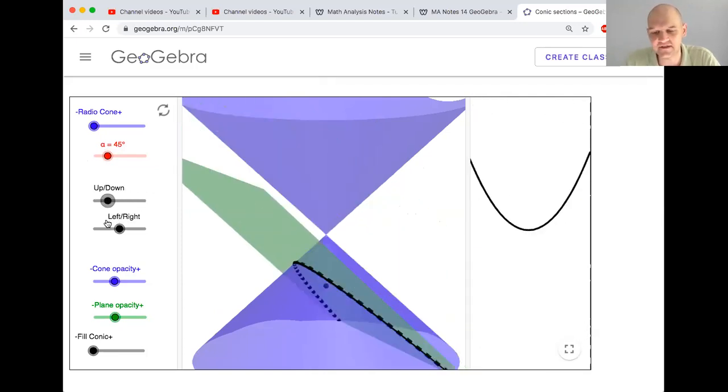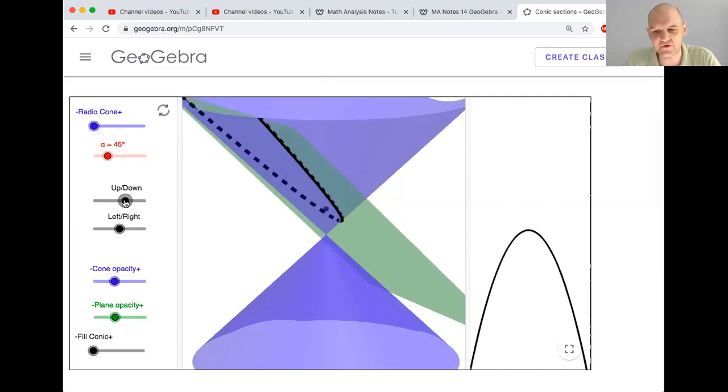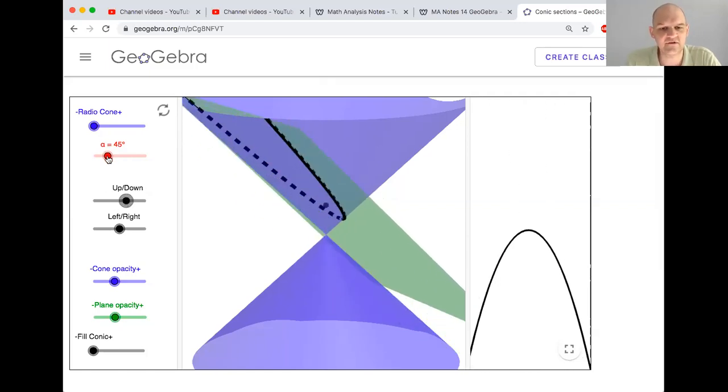So parabolas are like what you studied in algebra one and algebra two. We're going to talk about the geometric properties of them, but they're the same thing. So like y equals x squared is an example of a parabola. So that's when we're at exactly 45 degrees. I'm going to tilt it a little bit more.